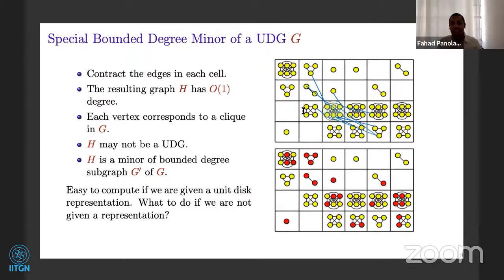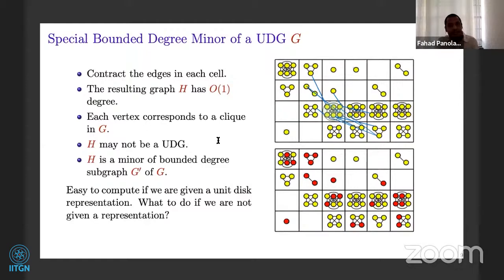So for a unit disc graph G, if a unit disc representation is given, I can get in polynomial time a partition V1, V2, ..., VL where each Vi is a clique, and the graph H obtained by contracting each block is a minor of G with constant maximum degree. Moreover, H is a minor of a constant-degree unit disc graph G', and that G' is also an induced subgraph of G. All these objects can be found in polynomial time if a unit disc representation is given.